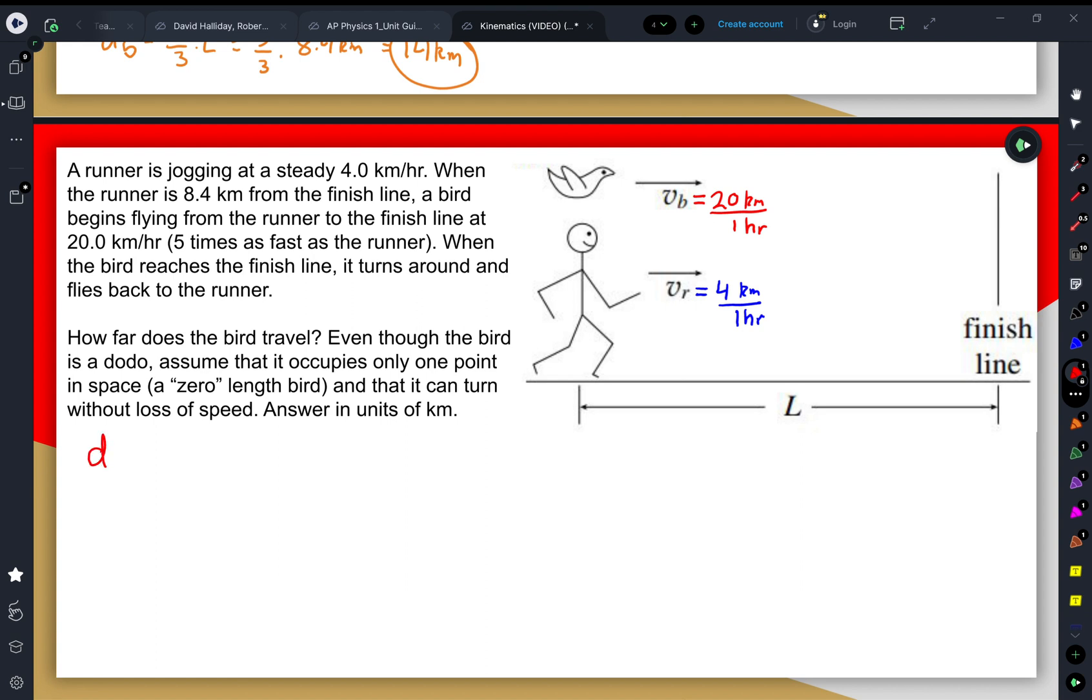So that would be the total distance of the bird - the distance in the forward direction, distance 1, plus the distance in the backwards direction, distance 2. Distance 1 we know is the length, and distance 2 would be that length minus position, like we saw once again.